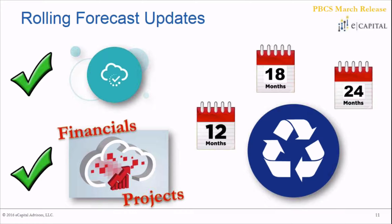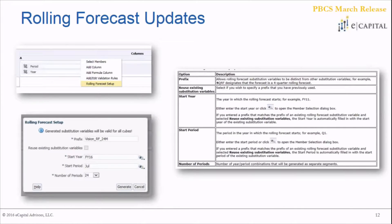Looking at the screenshots from within the application, it's easy to set up rolling forecasts. First, drag your period and year dimension to the columns of any data form. Once the time and year dimensions are on your columns, right-click on the column section of the form and you'll see a rolling forecast setup option. Note this is only available when period and year dimensions are on the column.